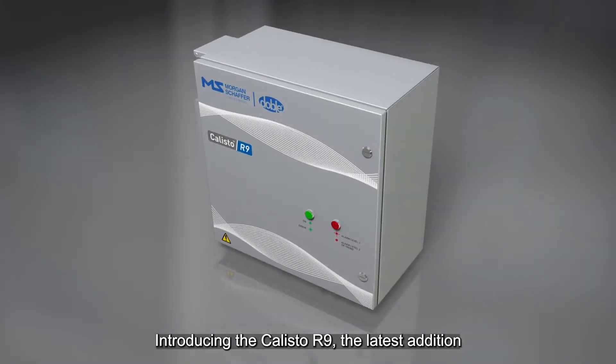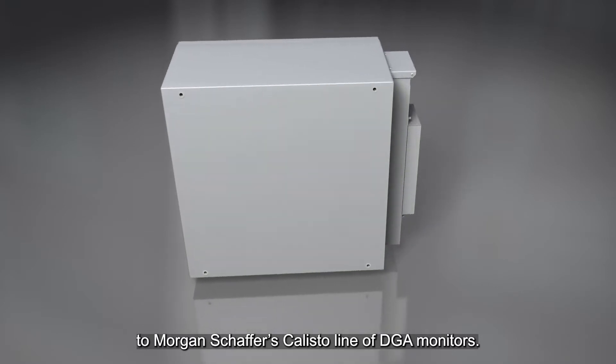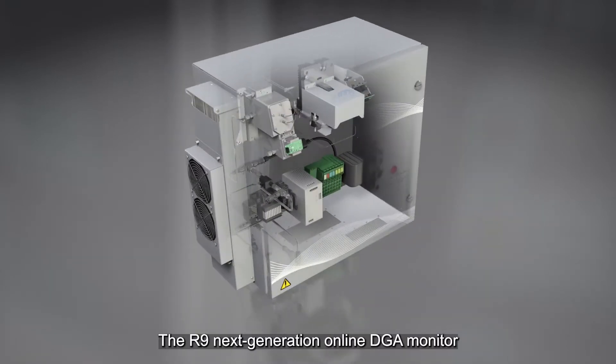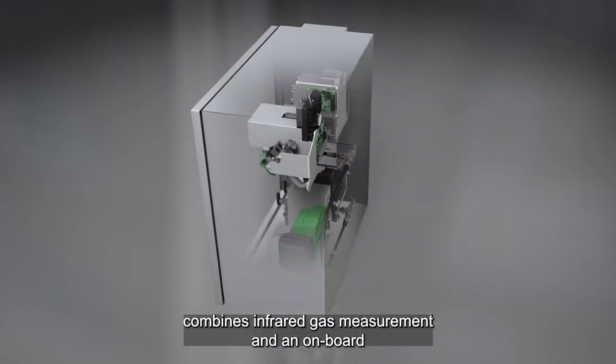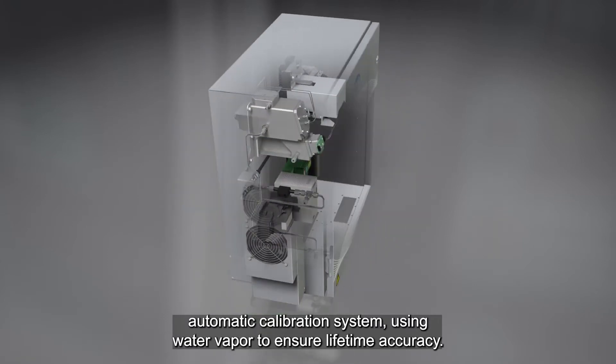Introducing the Callisto R9, the latest addition to Morgan Schaefer's Callisto line of DGA monitors. The R9 next-generation online DGA monitor combines infrared gas measurement and an onboard automatic calibration system using water vapor to ensure lifetime accuracy.